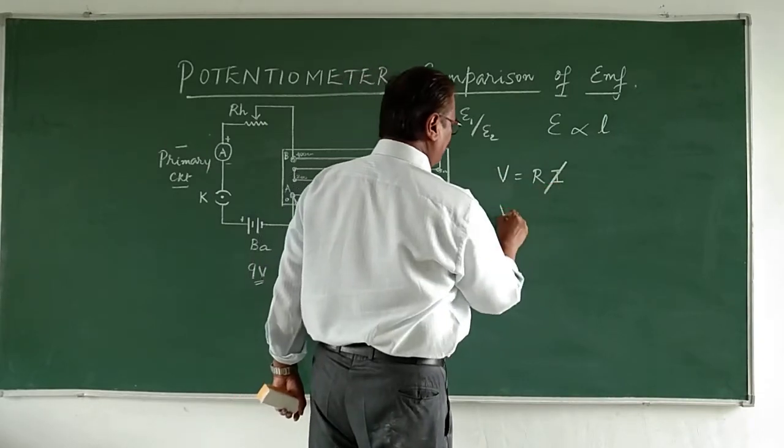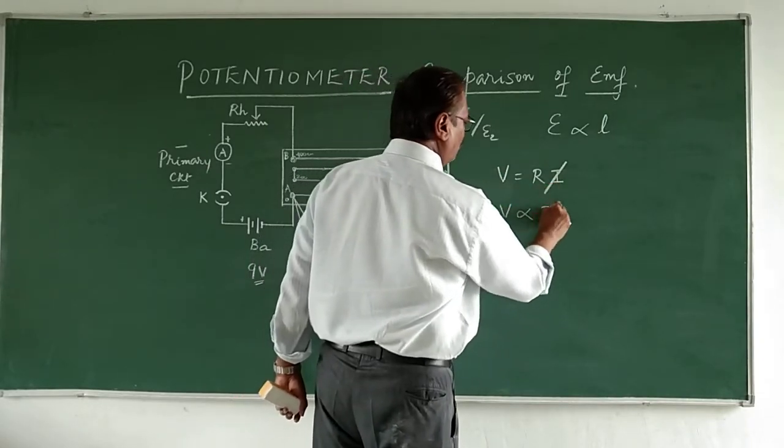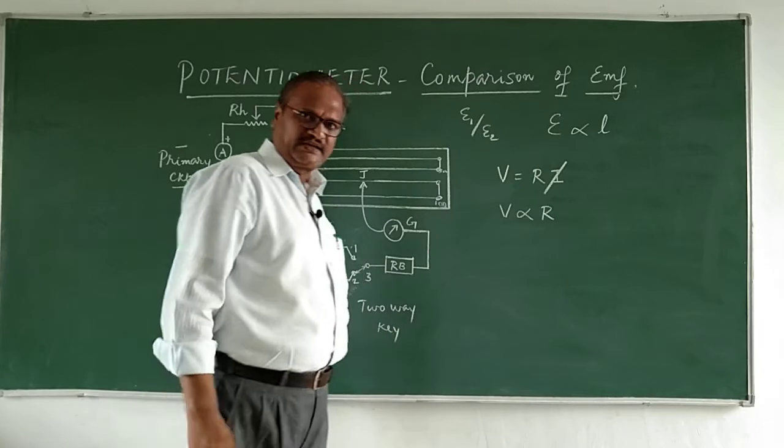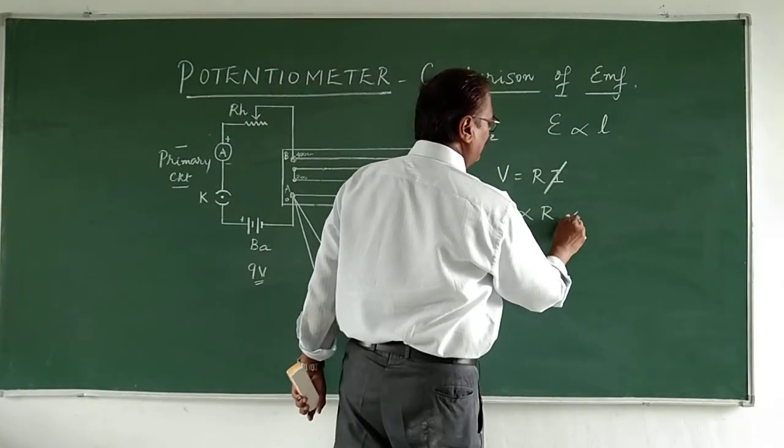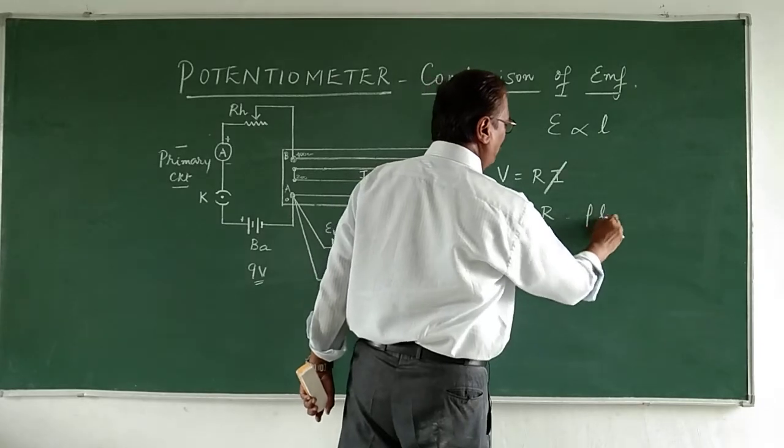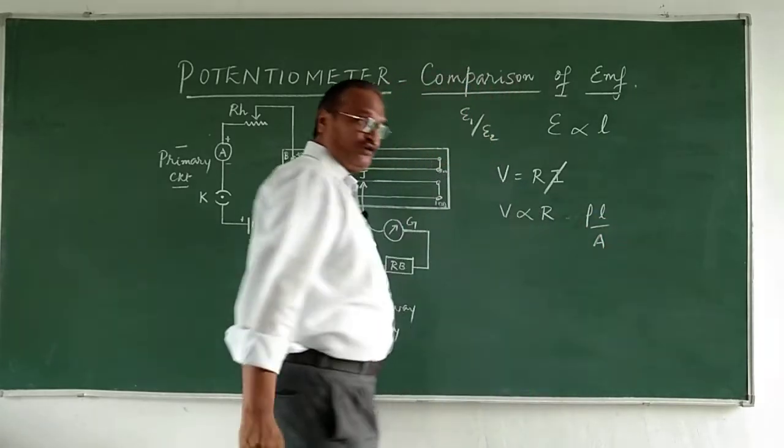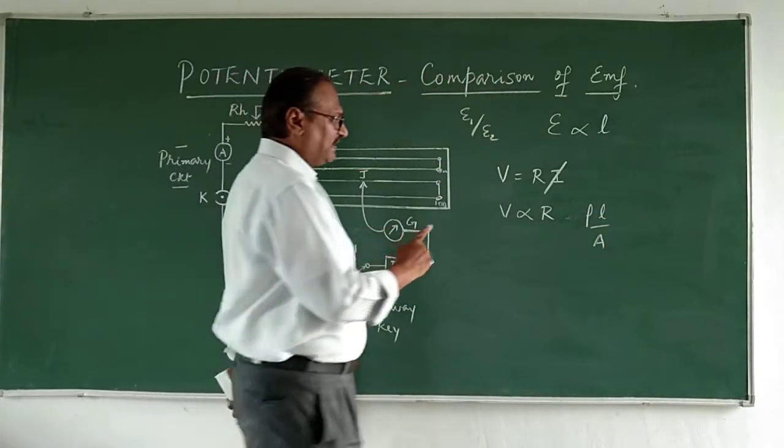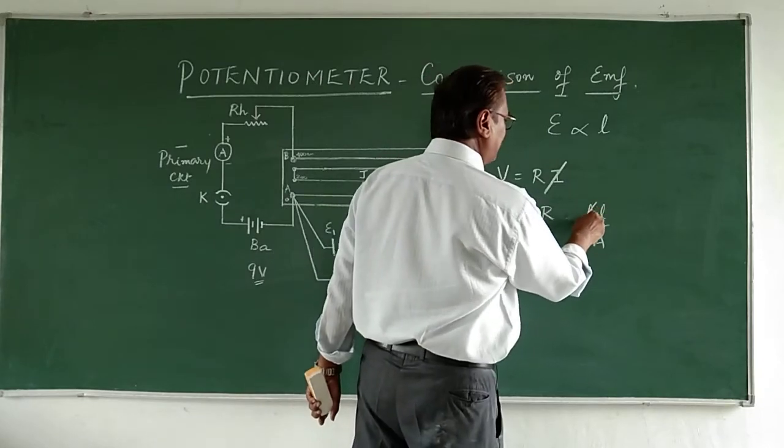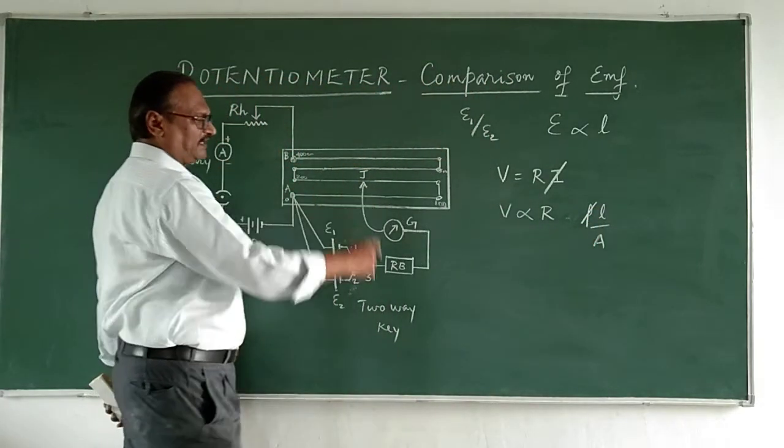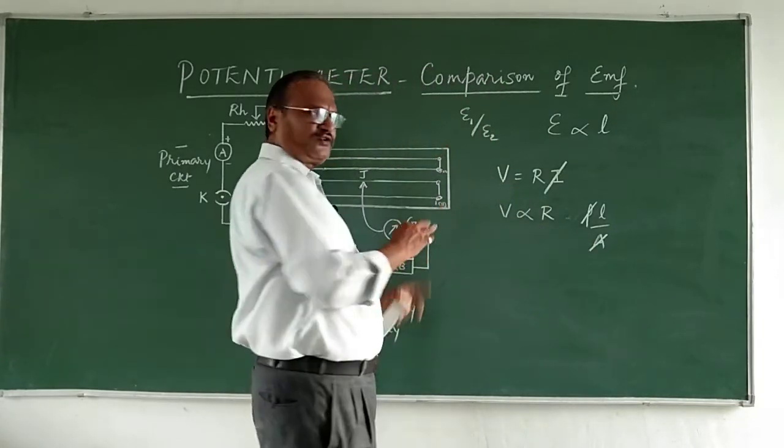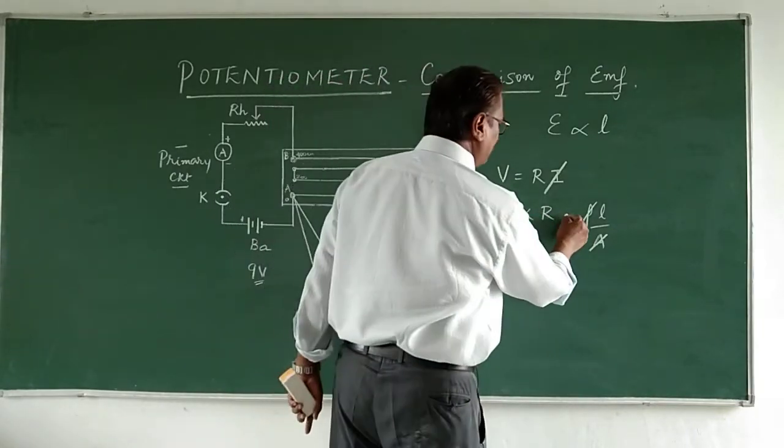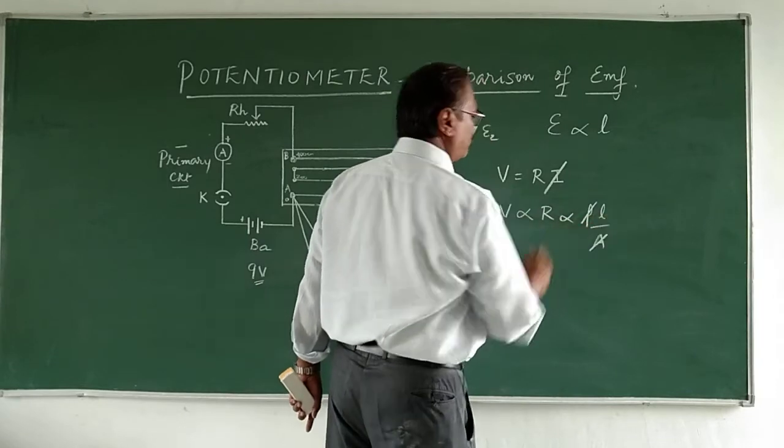When current is constant, V will be proportional to R. Now what is R? R is actually rho L upon A. Rho is the resistivity of the wire which we have taken, and A is the area of cross section of the wire. All of these are constants, so naturally R is proportional to L.